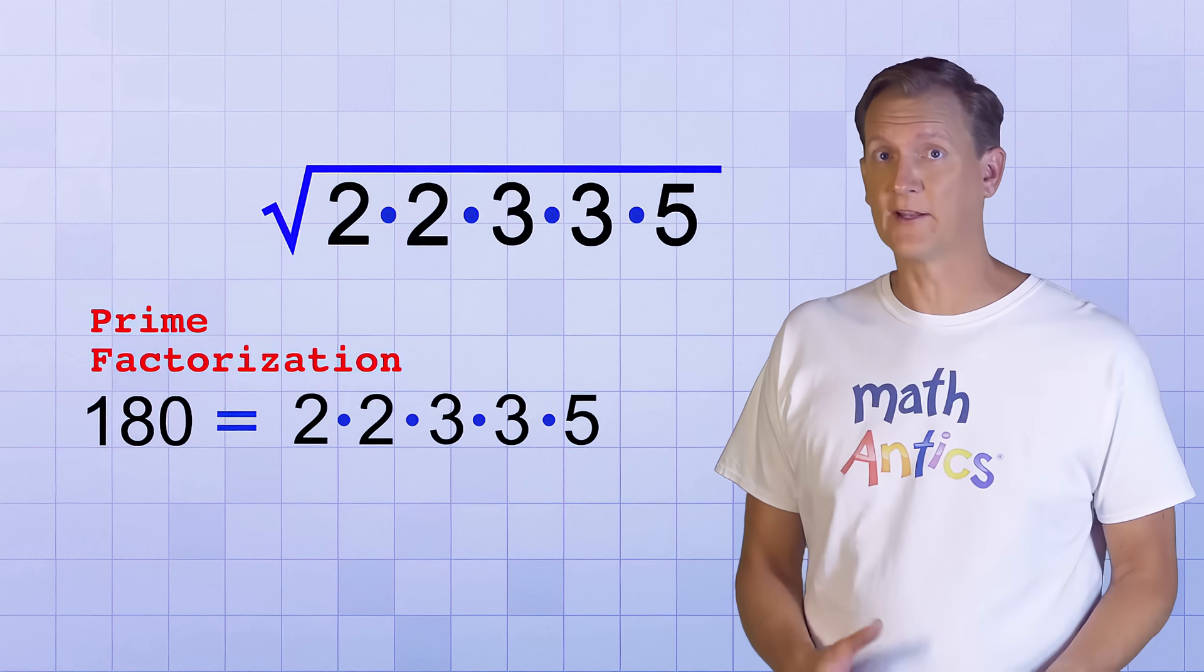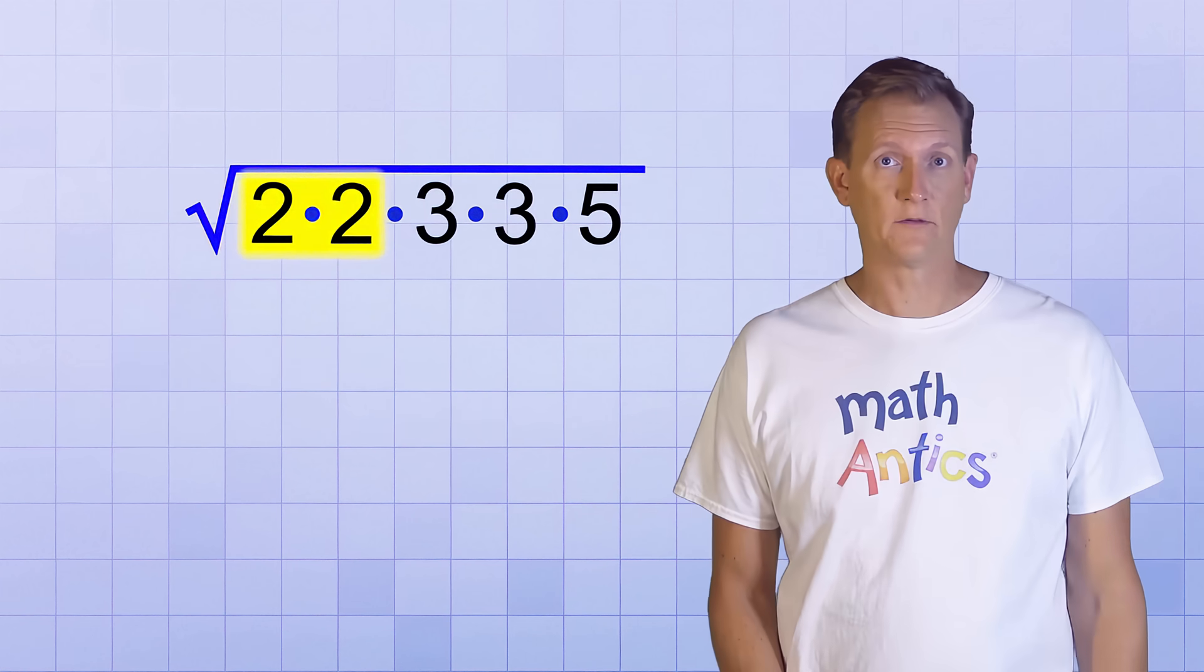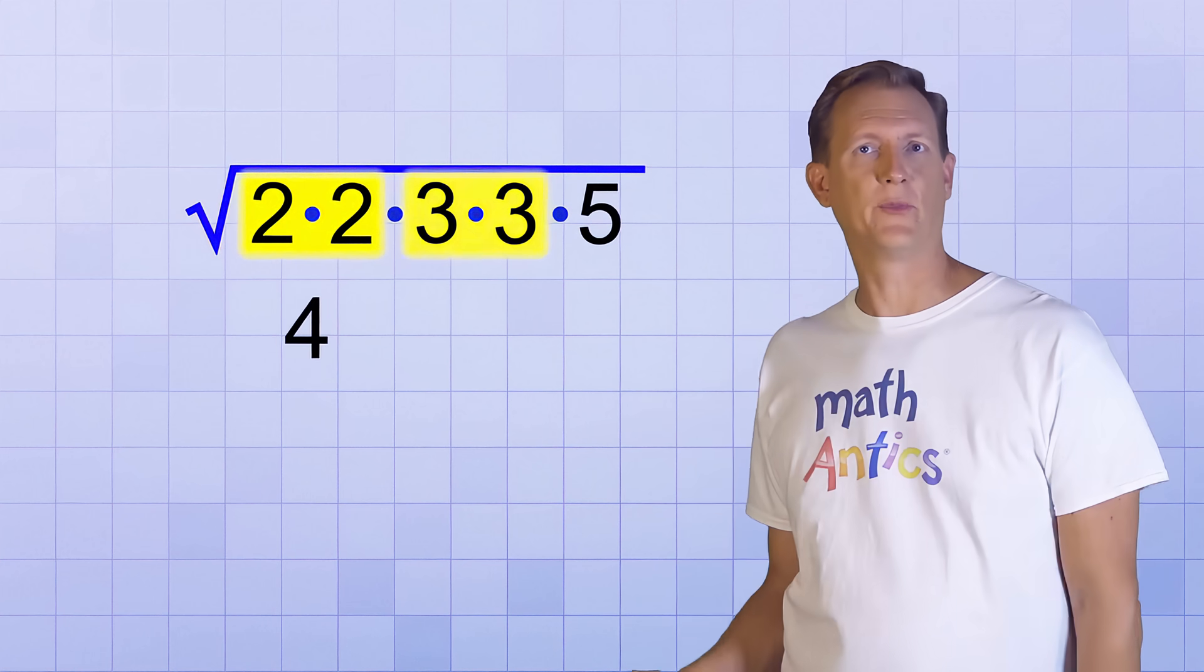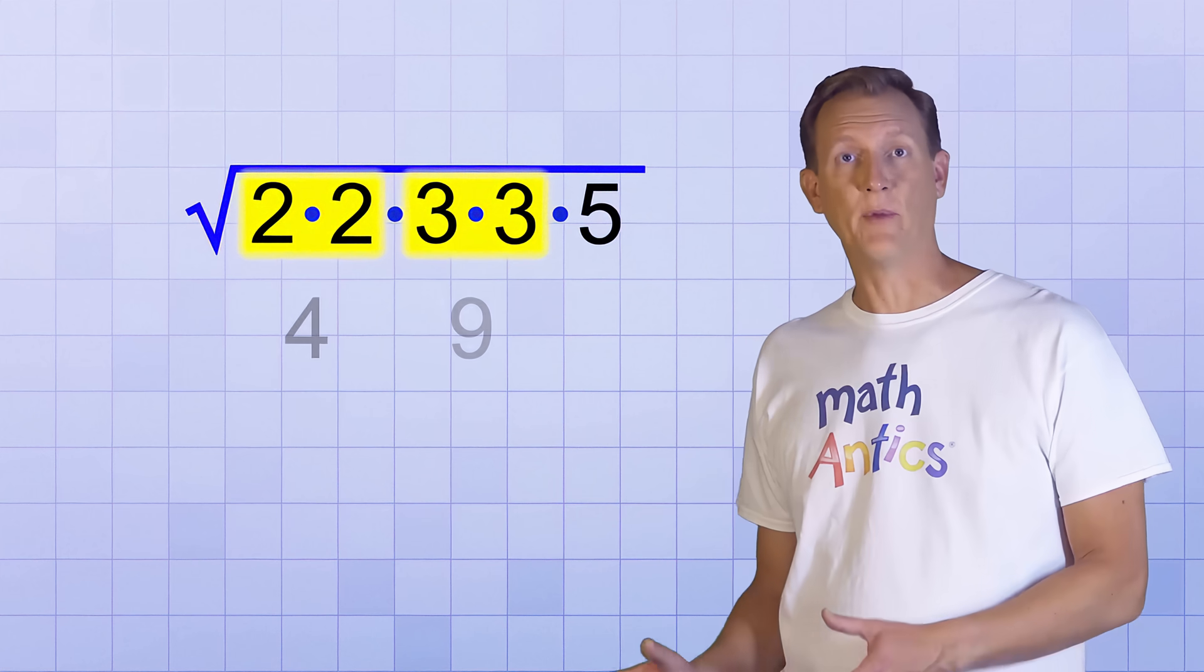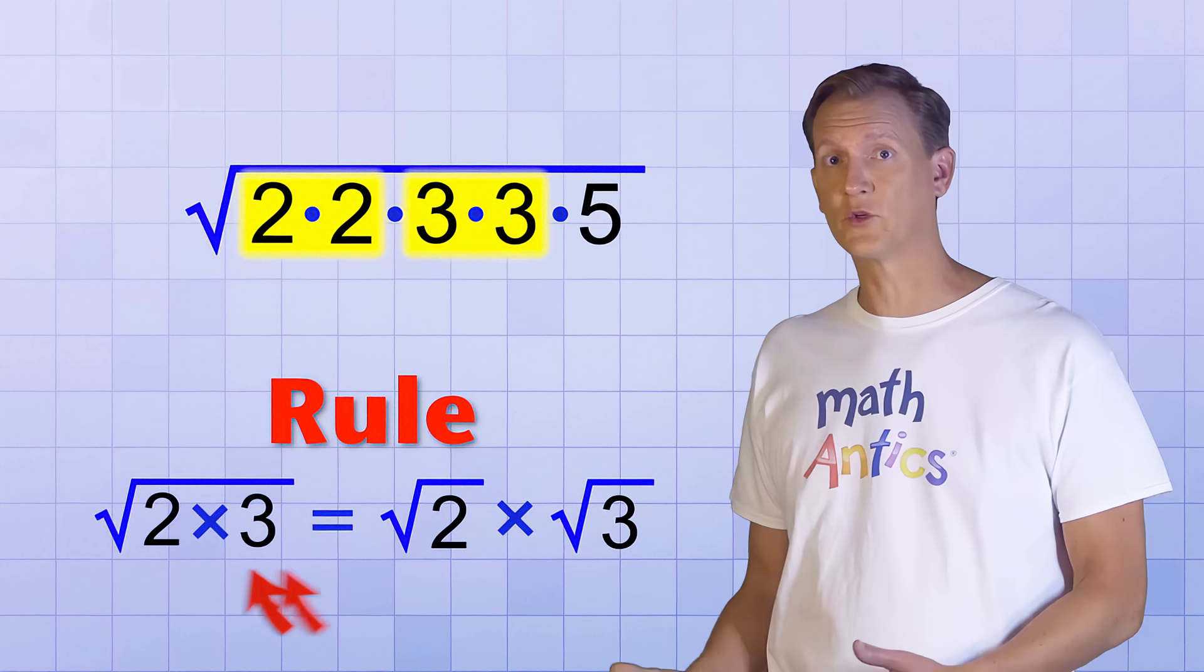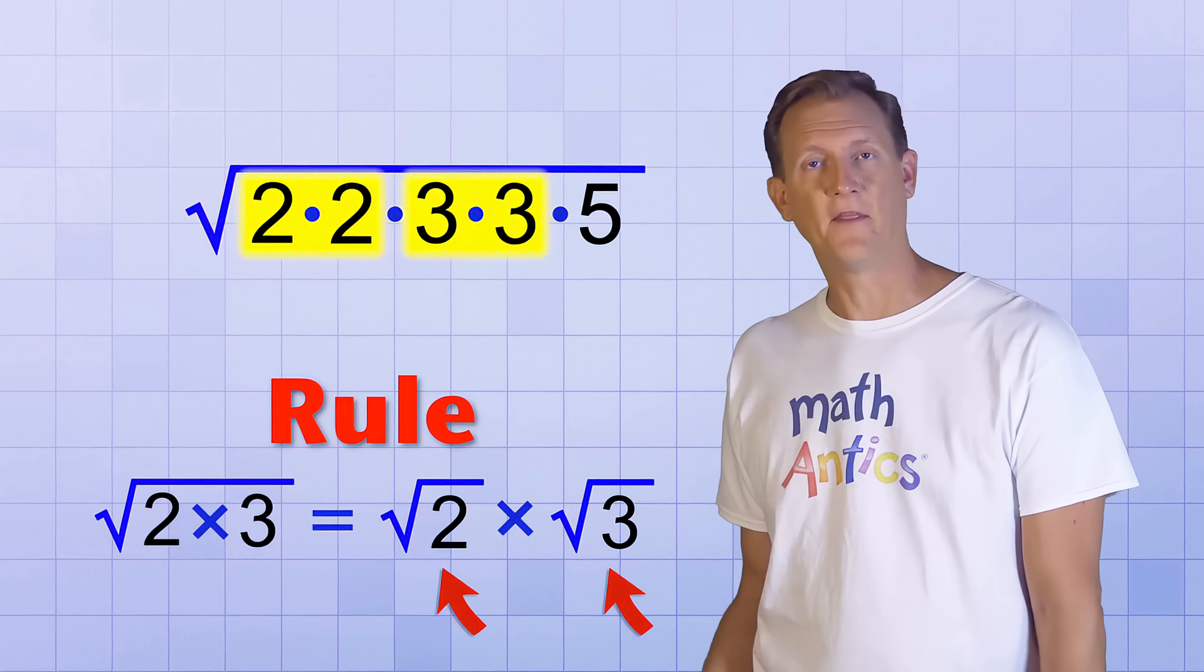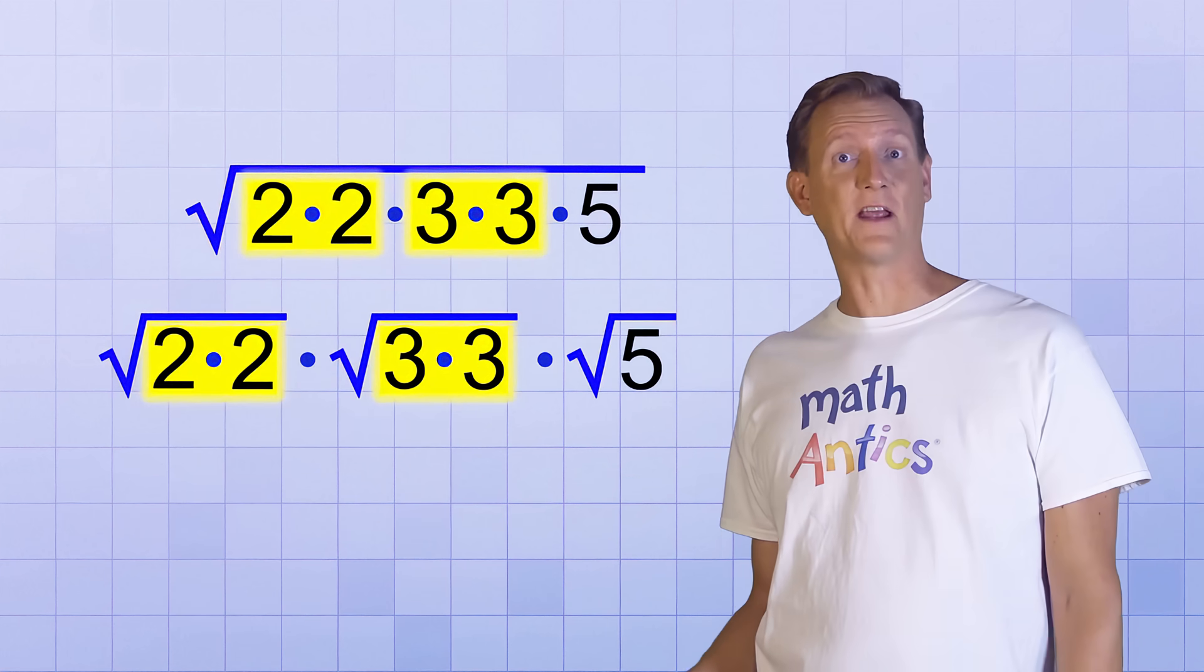Like in this example, the prime factorization of 180 is 2 times 2 times 3 times 3 times 5. So you can rewrite it like this and look for perfect squares. 2 times 2 is a perfect square, since its value is 4. And 3 times 3 is a perfect square, since its value is 9. Now remember the rule I mentioned earlier that says you can rewrite a square root as a product of the square roots of its factors. That means we can rewrite the problem like this. Do you see the advantage of doing that?